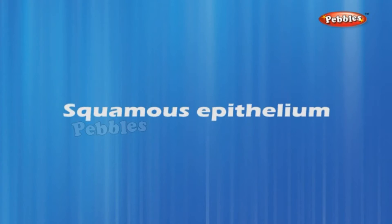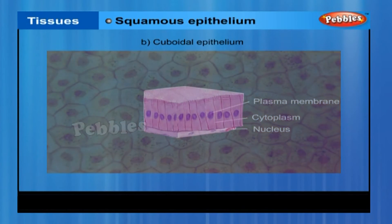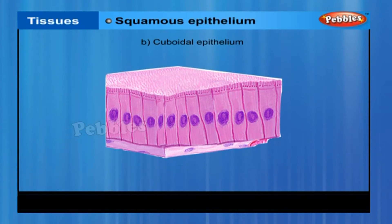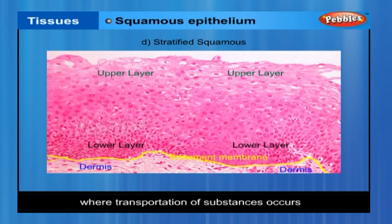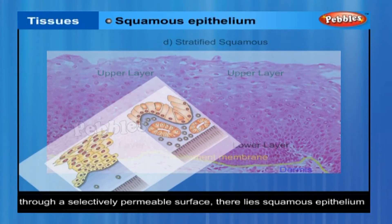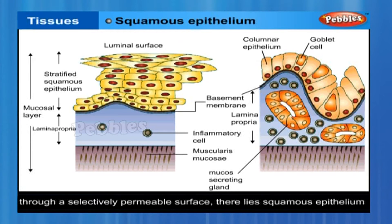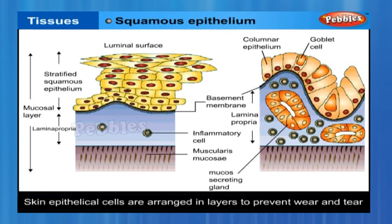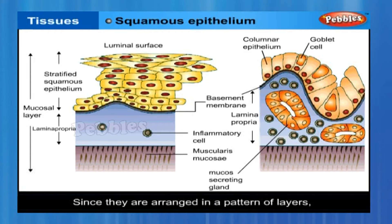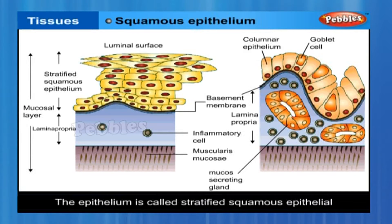Squamous epithelium. Different epithelia show different structures that correlate with their unique functions. For example, in cells lining blood vessels or lung alveoli, where transportation of substances occurs through a selectively permeable surface, there is a simple flat kind of epithelium called the simple squamous epithelium. Simple squamous epithelial cells are extremely thin and flat and form a delicate lining. Skin epithelial cells are arranged in many layers to prevent wear and tear, and since they are arranged in a pattern of layers, the epithelium is called stratified squamous epithelium.